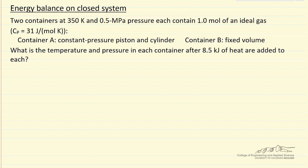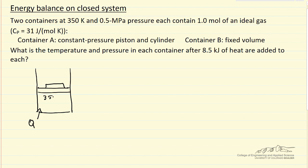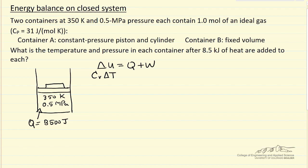Container A is the constant pressure system — a piston with constant weight. We're adding heat, starting at 350 Kelvin, 0.5 megapascals, and the heat added is 8500 joules — we'll work everything in joules. The first law for a closed system: change in internal energy equals heat plus work. The change in internal energy is Cv·ΔT for an ideal gas, independent of the type of process. Q is a fixed number, and work is minus pressure times the volume change.